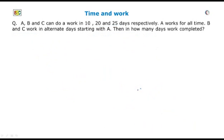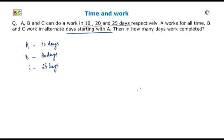The next question: A, B and C can do a work in 10, 20 and 25 days respectively. A works all the time, and B and C work on alternate days starting with B. Then in how many days is the work completed? It is given that A can do the work in 10 days, B in 20 days, and C in 25 days. We will assume the total work equal to the LCM of 10, 20 and 25, that is 100 units.